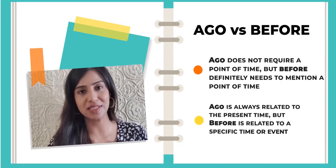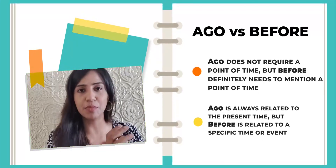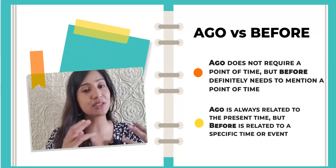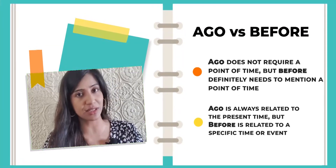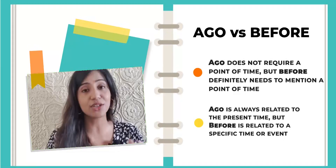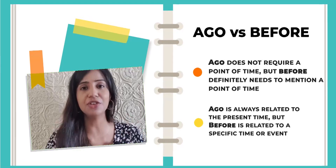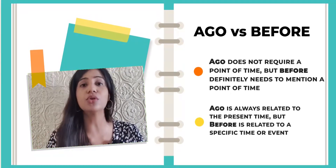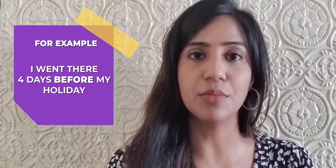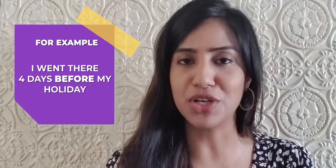Number 2: ago versus before. Ago does not require a specific point of reference and it is always related to the present. So I can say I went there 4 days ago — I don't require a point of reference. But when using before, you have to mention the specific event or time before which the incident happened. For example, I went there 4 days before my holiday — so the holiday becomes the point of reference.